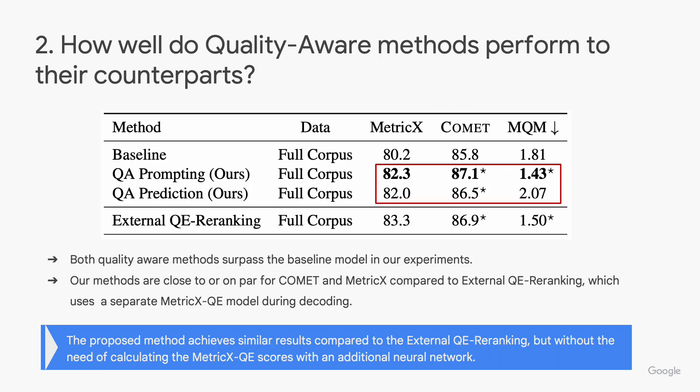Next, we compare the performance of our proposed methods. Both quality-aware methods outperform the baseline in our experiments. Our methods are close to or on par with COMET and MetricX external QE re-ranking, which uses a separate MetricX QE model during decoding. The proposed method achieves similar results compared to external QE re-ranking, but without the need to calculate MetricX QE scores with an additional neural network.